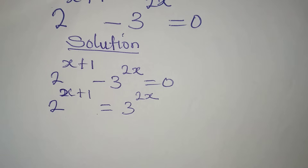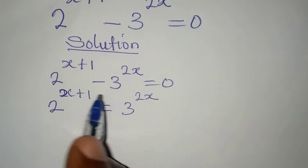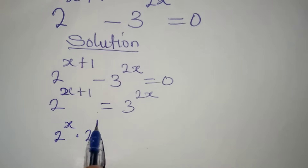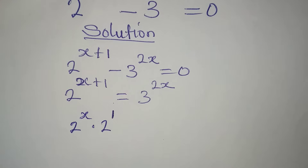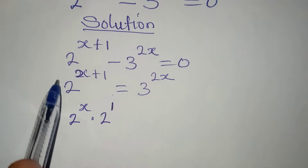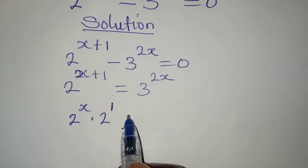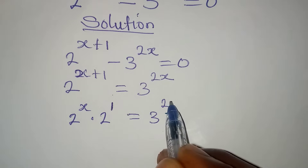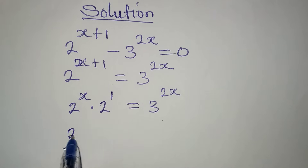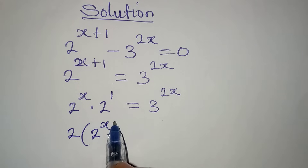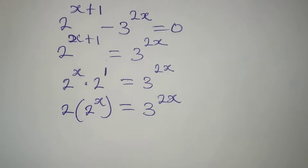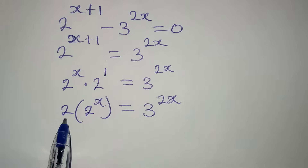This will become positive on the right. I want to arrange this so I have 2 to the power of x, multiplied by 2 to the power of 1, because according to the law of indices I add the powers. This gives us 2 multiplied by 2 to the power of x, equal to 3 to the power of 2x, because 2 to the power of 1 equals 2.